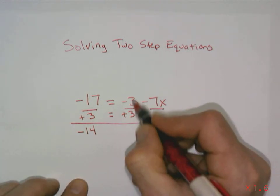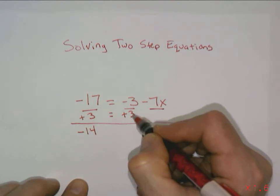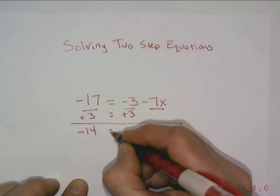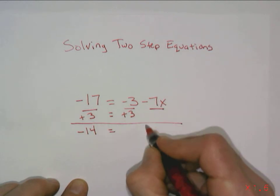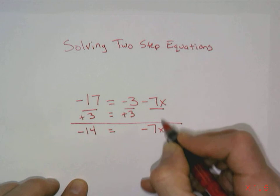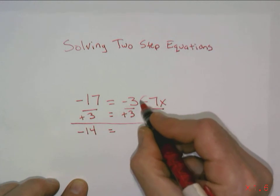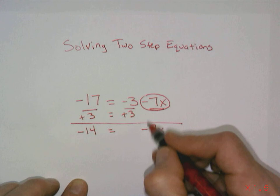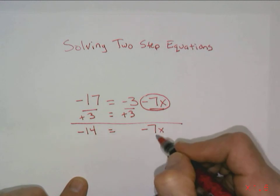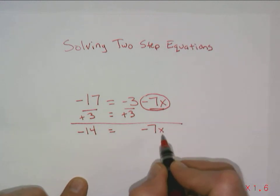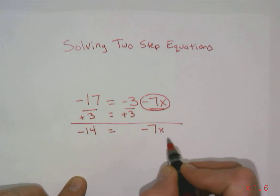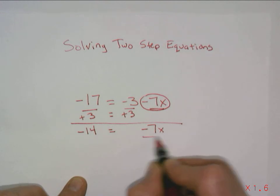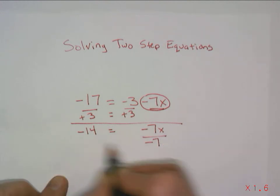And then because I use the additive inverse, this becomes zero. And I'm left with a negative 7x. And don't forget that negative that belongs to the 7x. And so this again comes down just as a negative 7x. So now I have a negative 7 times x equals negative 14. It's multiplication, so I'm going to divide both sides by negative 7.